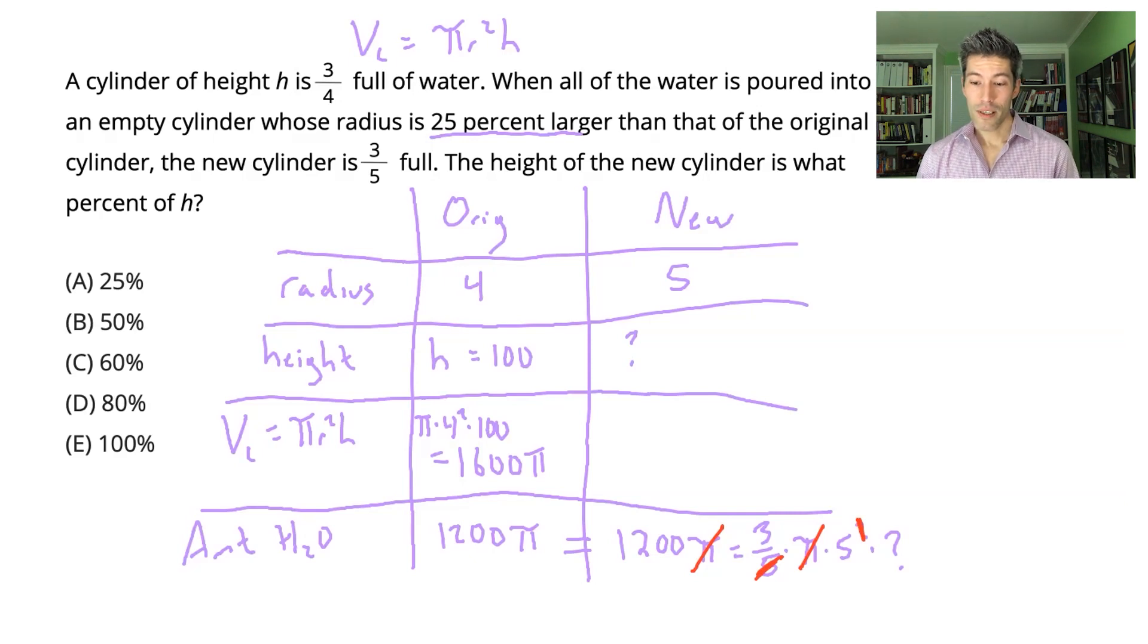What's left is 1200 equals 3 times 5 times this new height. So 3 times 5 is 15, and I still have to multiply by this new height. So to solve for the new height, I will divide both sides by 15.